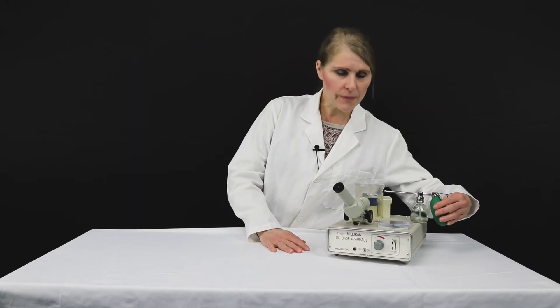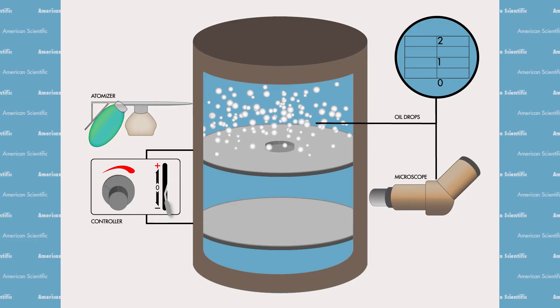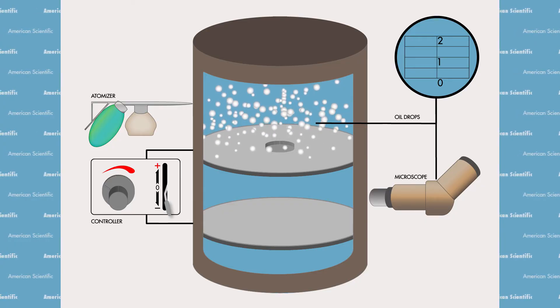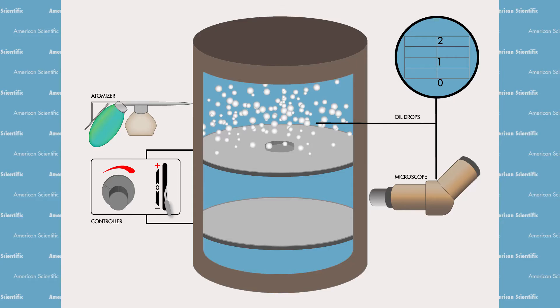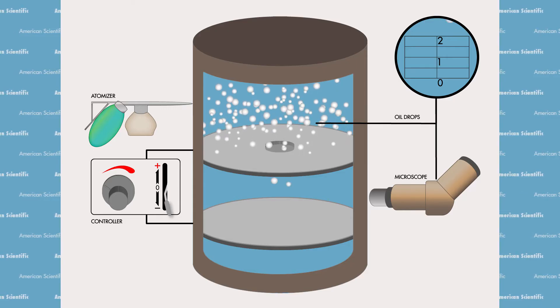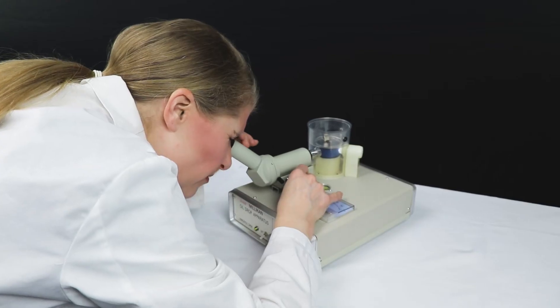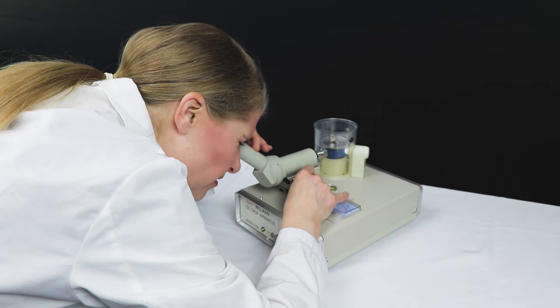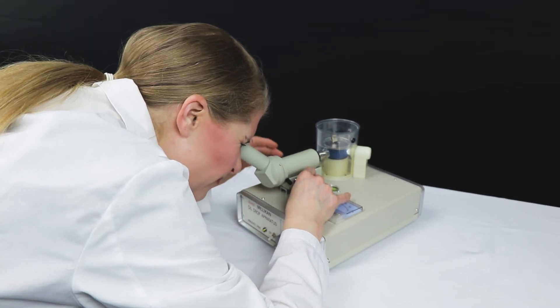The top portion is a canister with a small hole that the experimenter can spray the oil through. The oil will pick up a small charge as it comes through the atomizer. The very bottom portion of the top canister has an even smaller hole that allows the oil droplets to fall through. Looking through the eyepiece you'll see the white oil droplets against the blue background. Differences in the size of the oil droplets means that some will fall faster than others. Be sure to focus the eyepiece of the microscope so you can visualize the droplets easily.